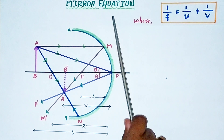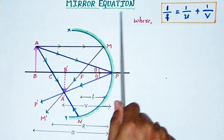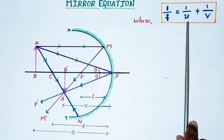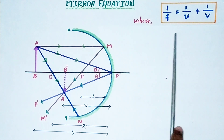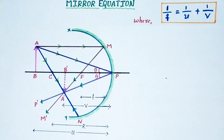This mirror equation is very important to manufacture spherical mirrors of a particular focal length. For our required focal length, we can manufacture the mirrors using this mirror equation. This mirror equation is a mathematical equation which gives the relation between focal length, object distance, and image distance — that is, 1/f = 1/u + 1/v.